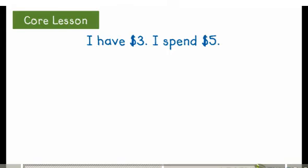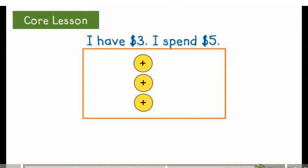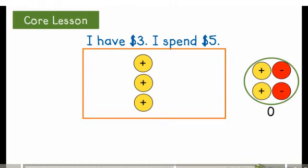I have $3. I spend $5. I want to spend $5, but I don't have 5 chips on my mat. If I simply add 2 more positive chips, I'm changing the original value on the mat. So I must add 2 positive chips and 2 negative chips to make zero pairs.